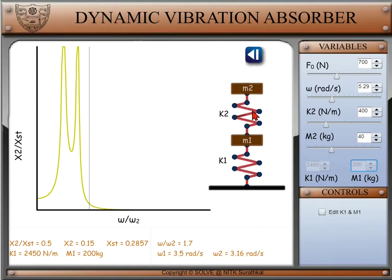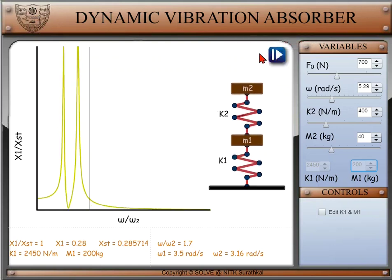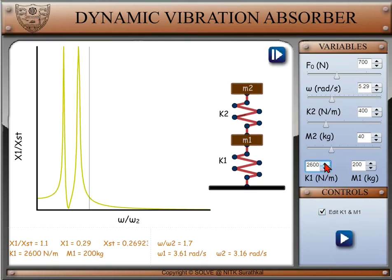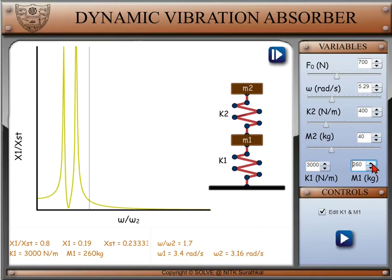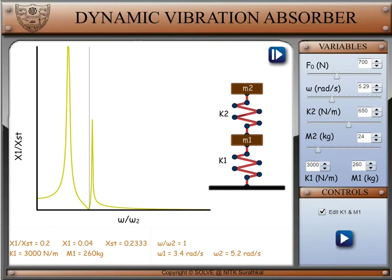Move back to the first animation page. Click on the checkbox to edit the spring constant k1 of the first body, mass m1 of the first body, and try to reduce the vibrations in the primary mass, that is when the ratio of omega by omega 2 equals 1 or X1 equals 0, by changing the secondary mass parameters. Once done, click on play to observe the new dynamic absorber.